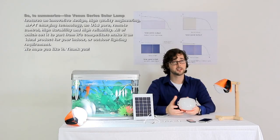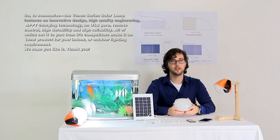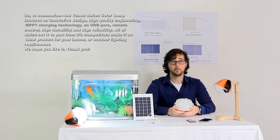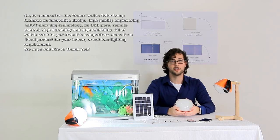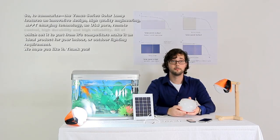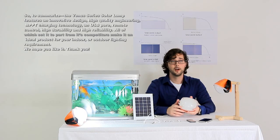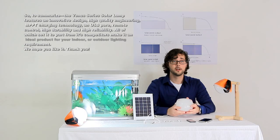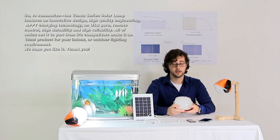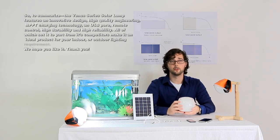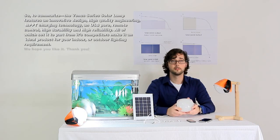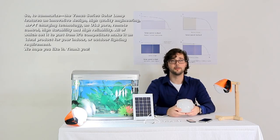So to summarize, the Venus series solar lamp features innovative design, high quality engineering, MPPT charging technology, a USB port, remote control, high durability, and high reliability. All of which set it apart from its competitors and make it an ideal product for your indoor or outdoor lighting requirements. We hope you like it. Thank you.